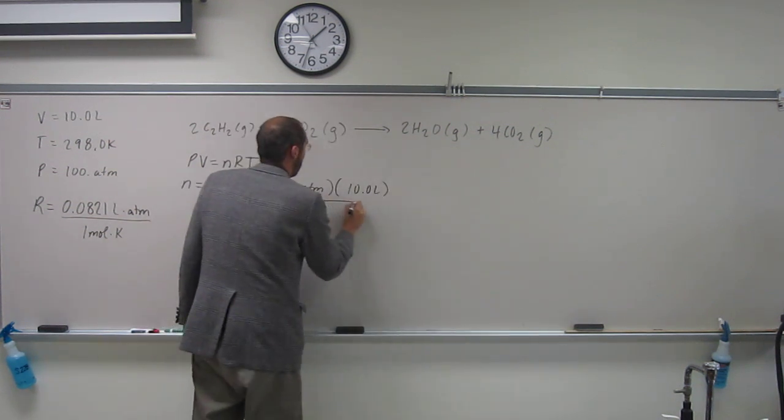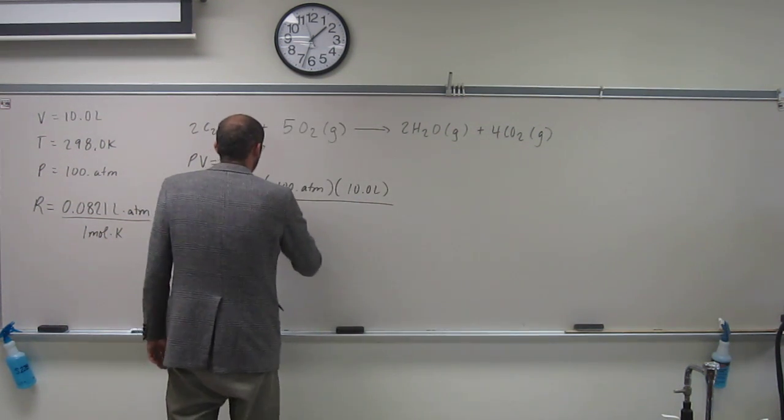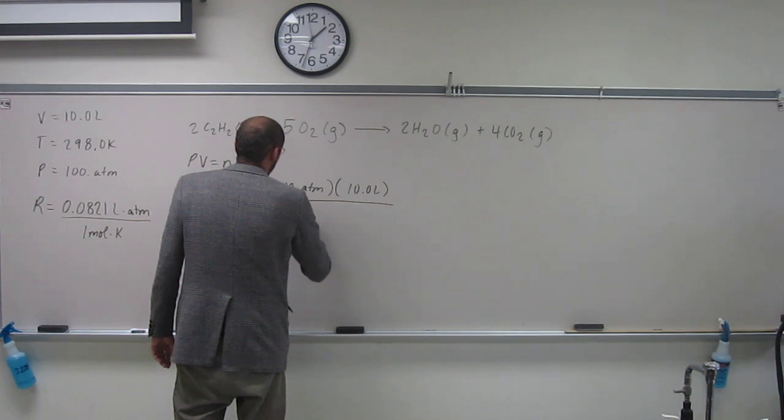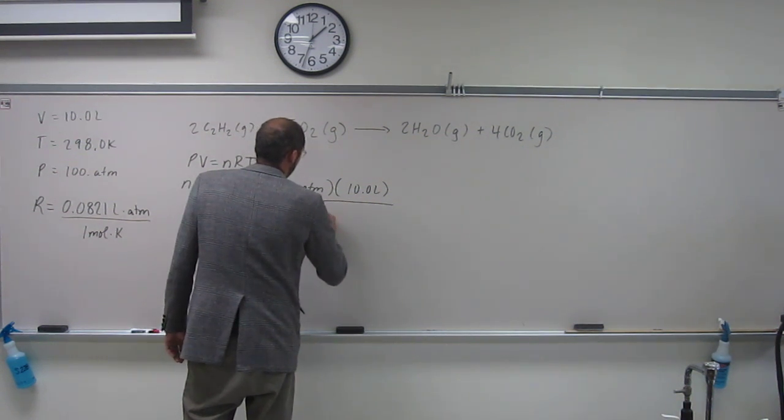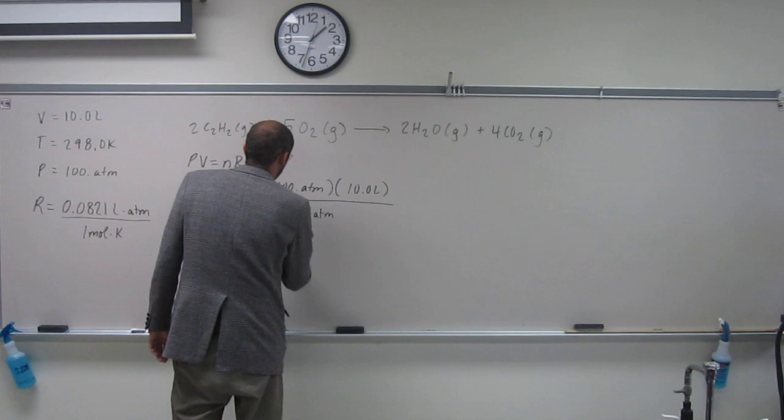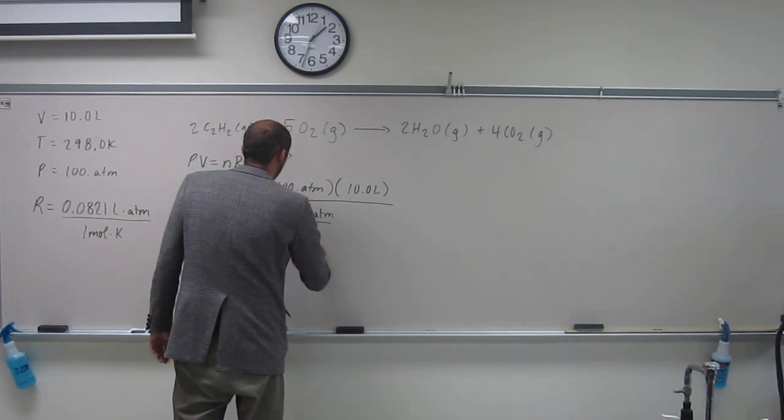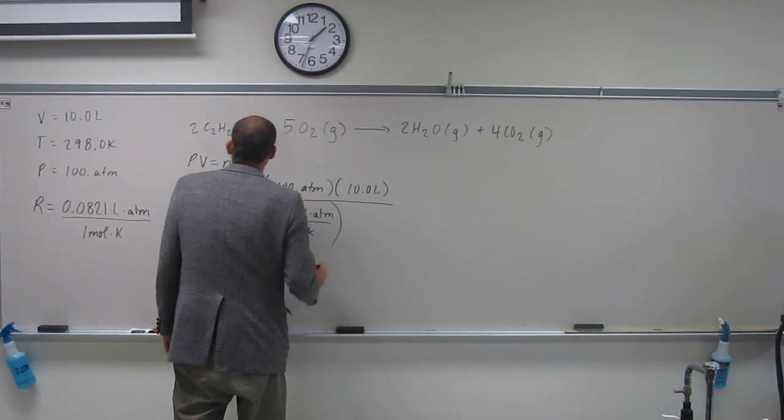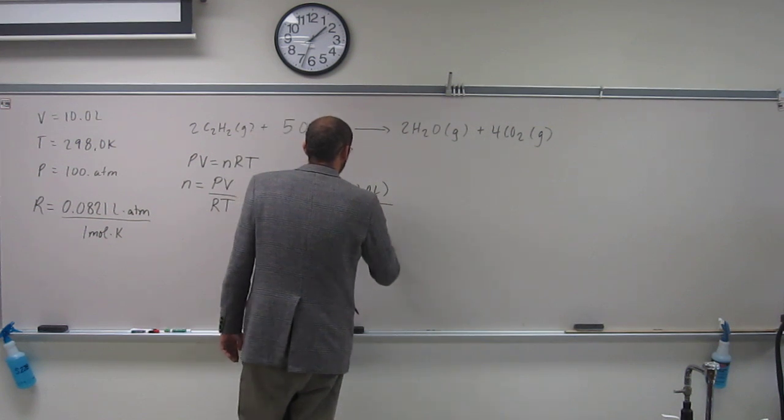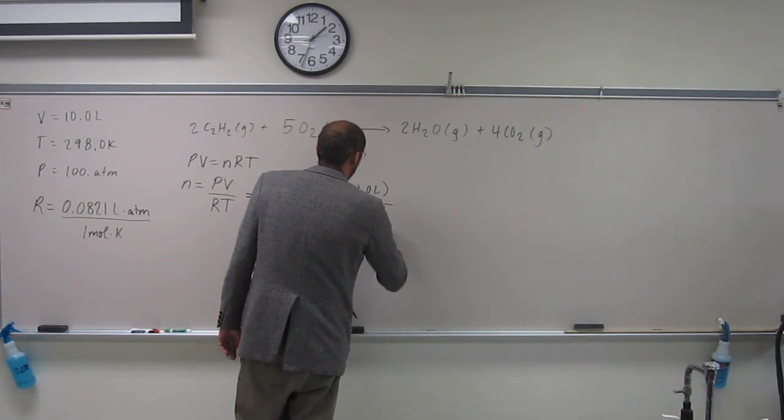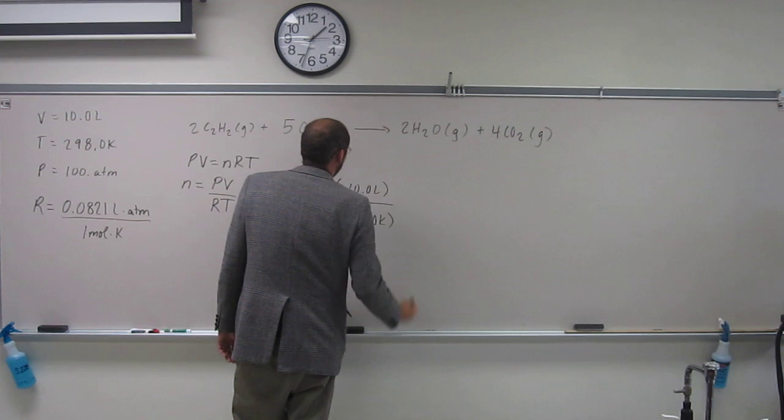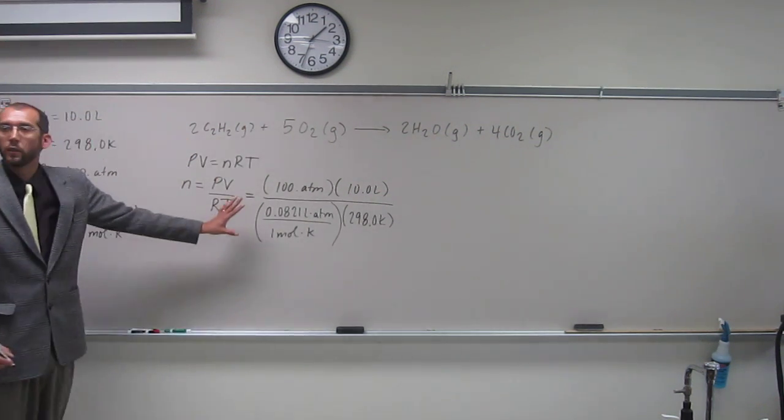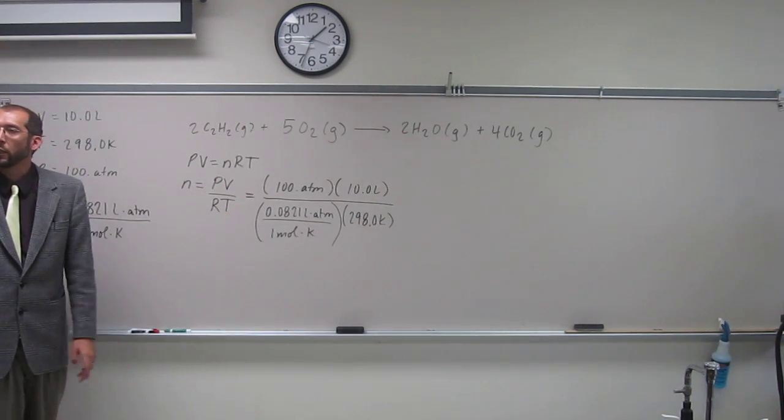Divided by R 0.0821 liter atm per mole Kelvin, times temperature 298.0 Kelvin. Is everybody okay with writing something like that?